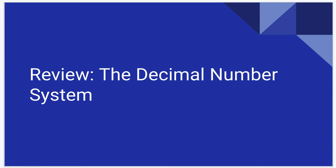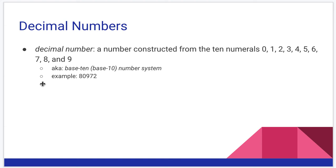First, we need to understand what it means to have a decimal number. You might think of a decimal number as something like 3.1415 — we're kind of ingrained to think a decimal number has a decimal point and a fractional part. That is technically not true. A decimal number is a number constructed from the ten numerals 0 through 9, also known as the base 10 number system. An example is 80,972 — it does not require a decimal point.